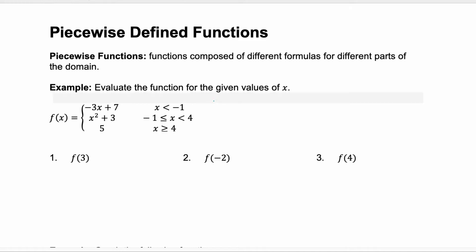Look at this example. Here we have a piecewise function that has three different pieces, and each piece has a different part of the domain associated with it. For example, the first part, negative 3x plus 7, which is a line, is only valid for values of x less than negative 1.